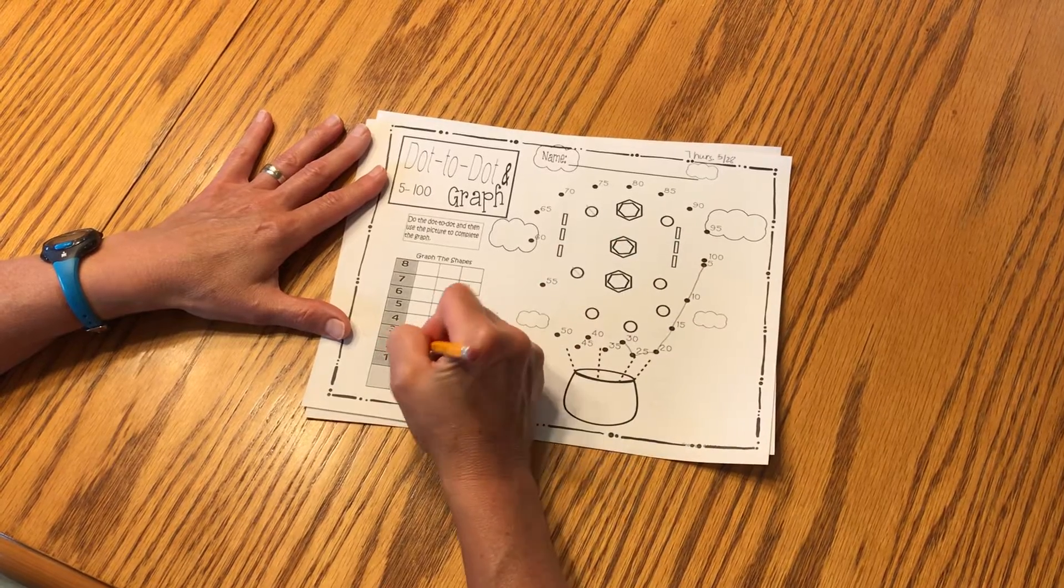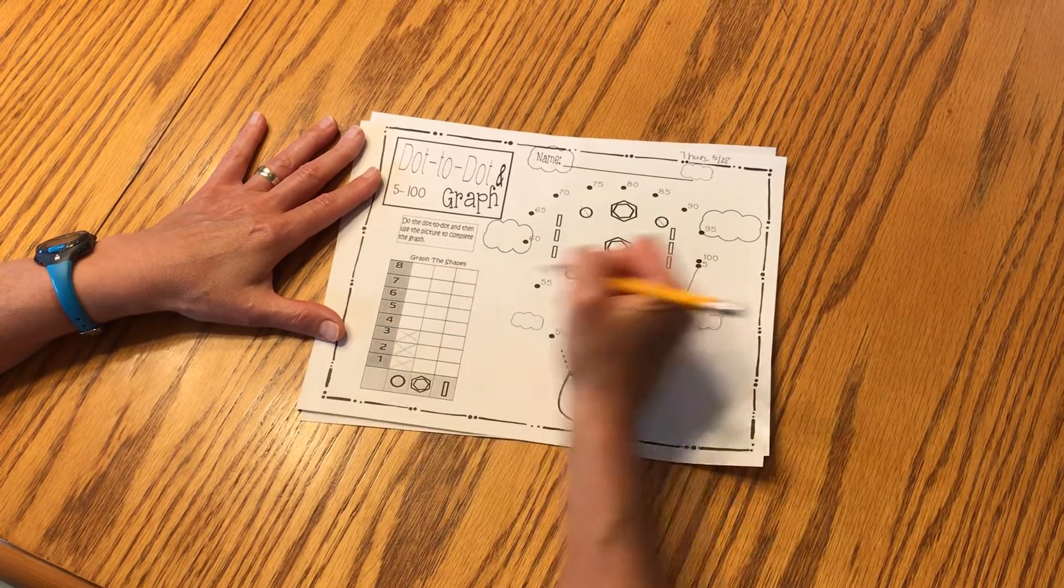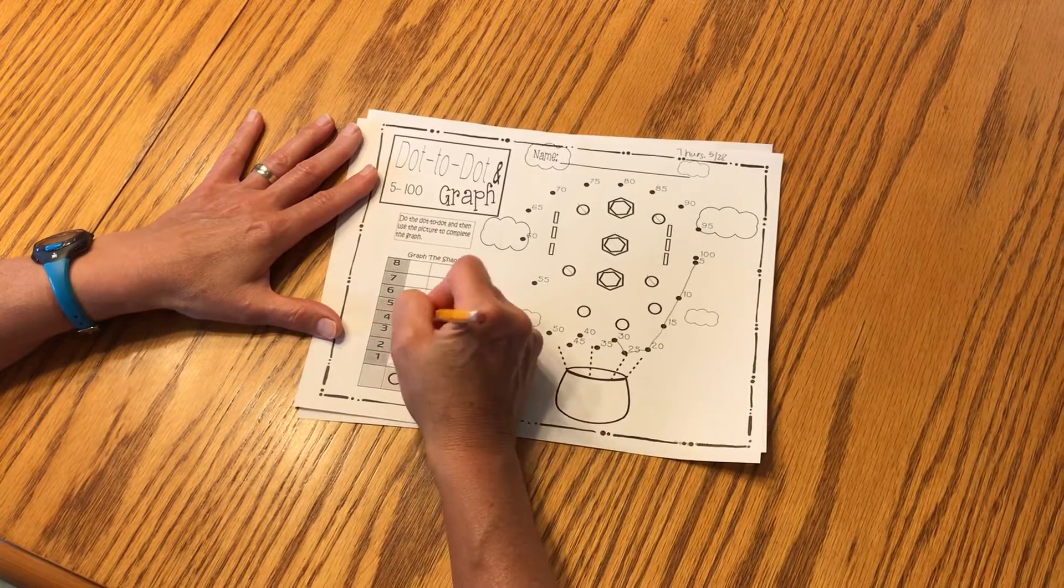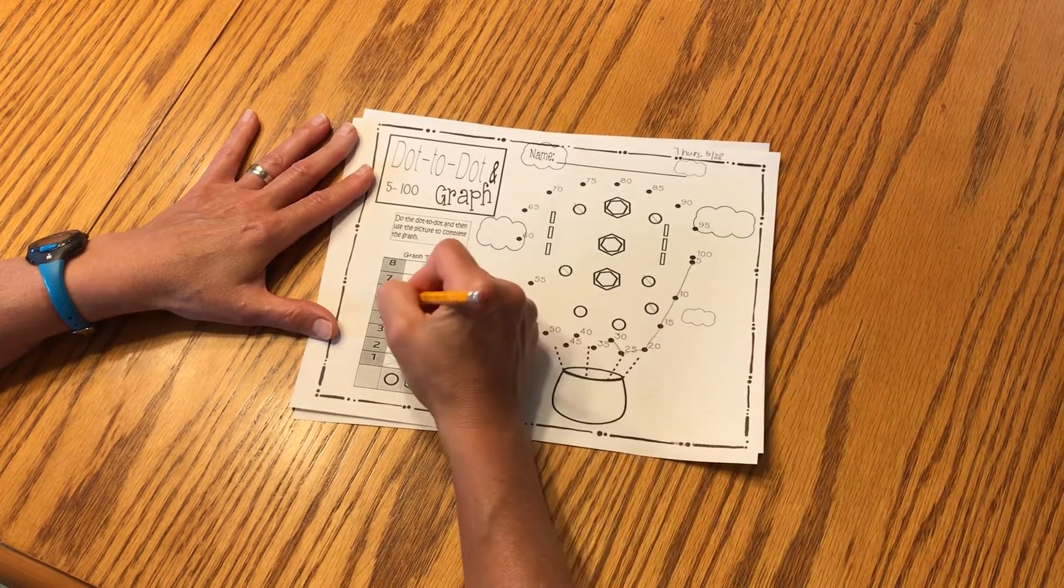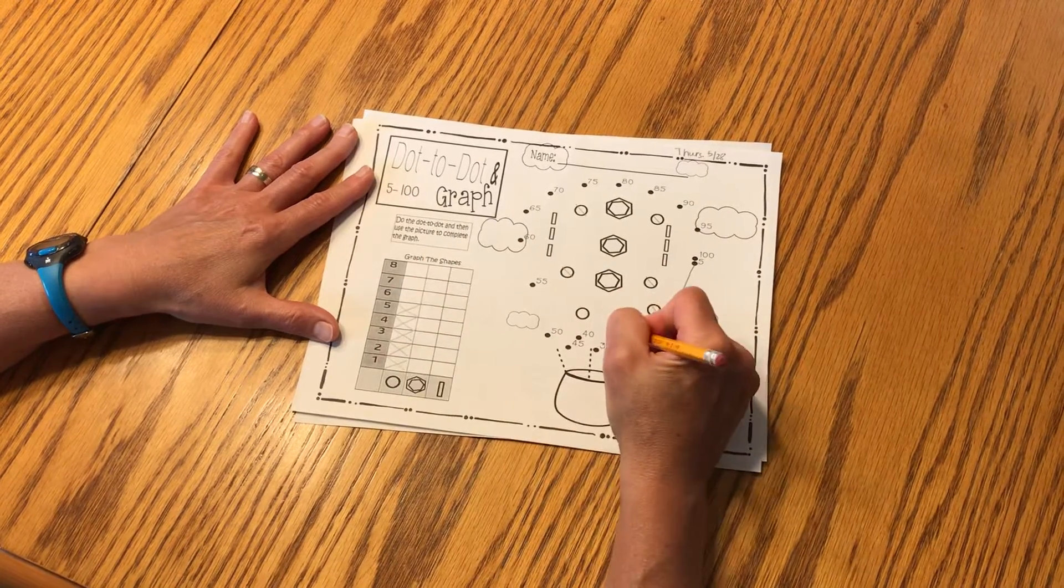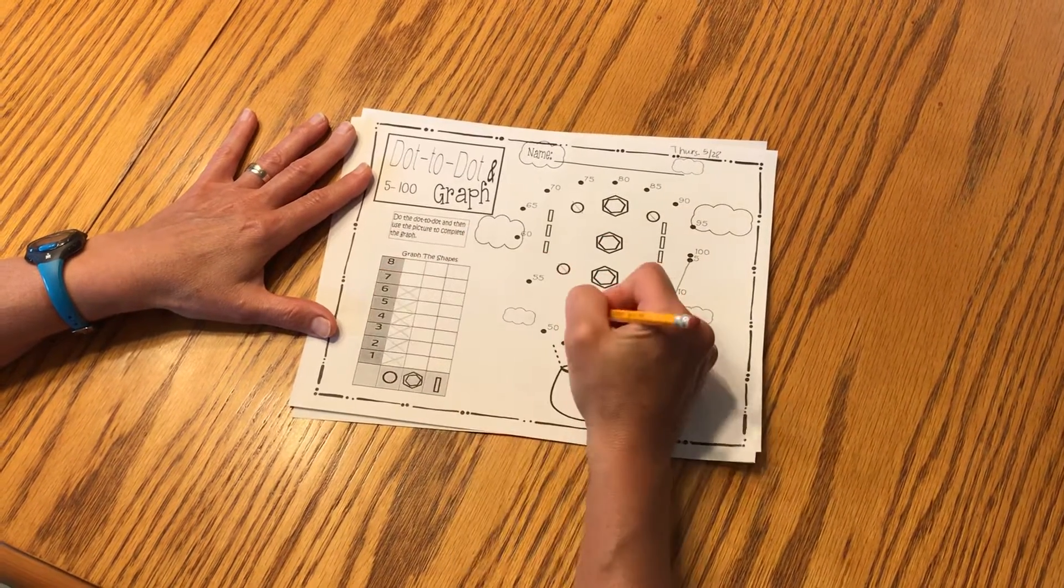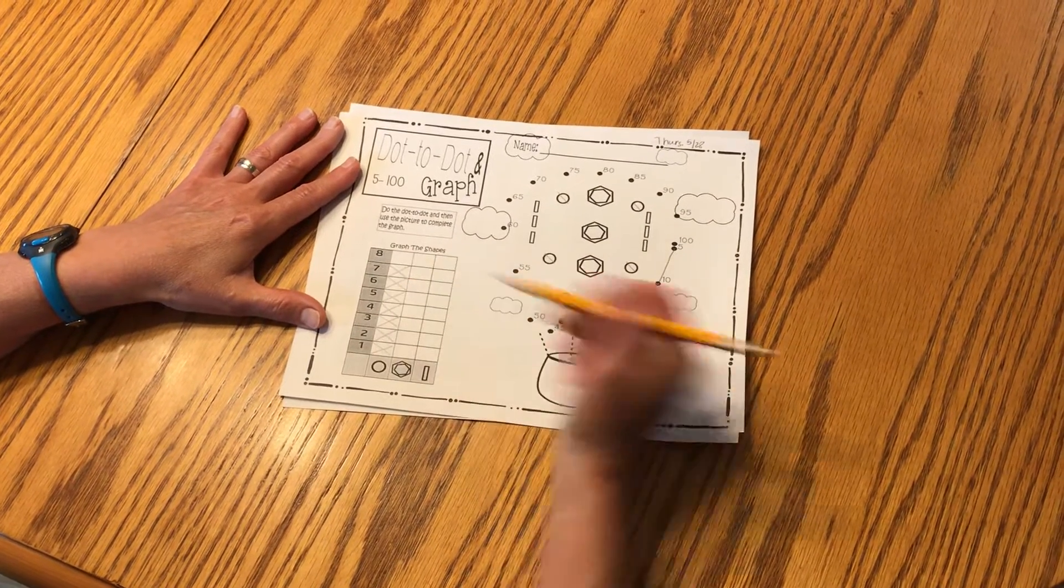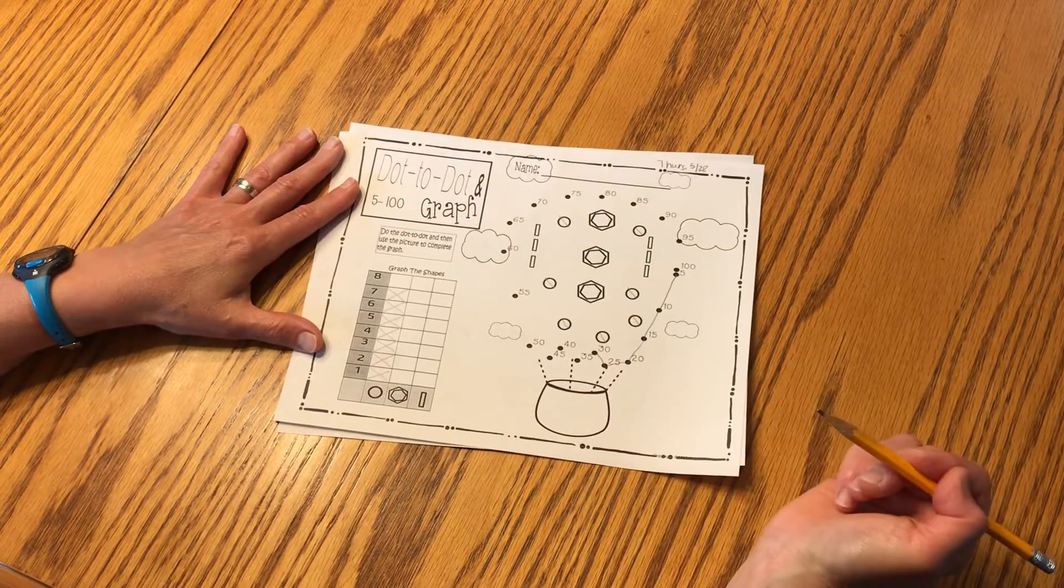So that's one circle, two circles, three circles. Whoops, I have to draw my line. Four circles, five circles, six circles, seven circles. So there are seven circles on this picture, boys and girls.